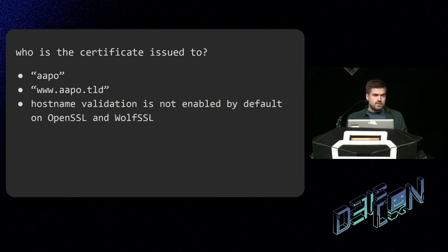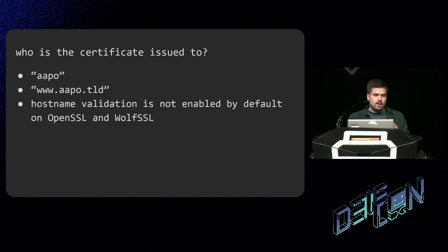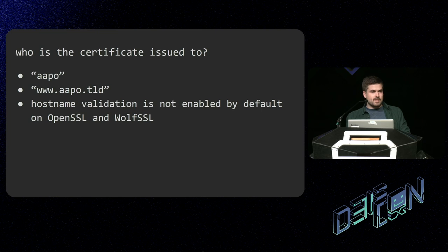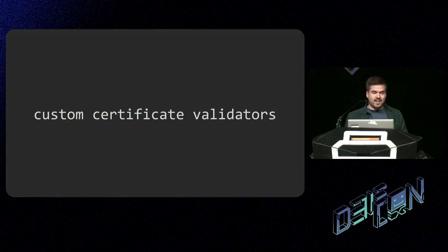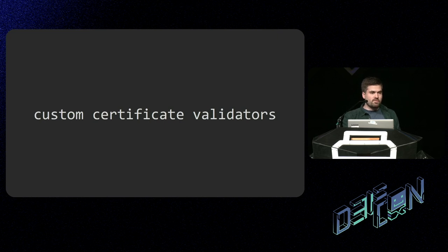Who is the certificate issued to? If I issue a certificate to my server, it's not issued to Google's or Apple's servers — it's only for mine. Libraries like OpenSSL and WolfSSL don't check who the certificate is issued to by default — you have to enable it in settings. The default OpenSSL context doesn't have hostname validation enabled, so if you use OpenSSL, you might want to check that. And don't get me started with custom certificate validators — they are really scary but really fun to read in source code.